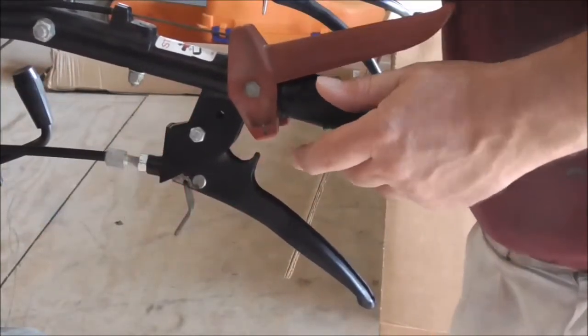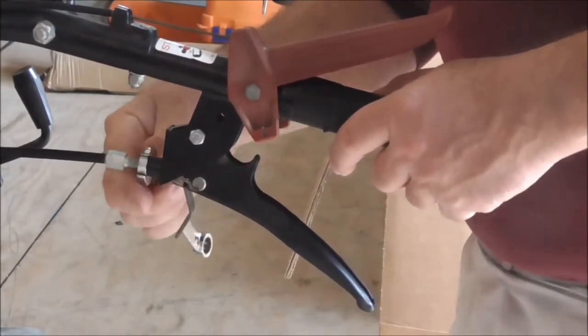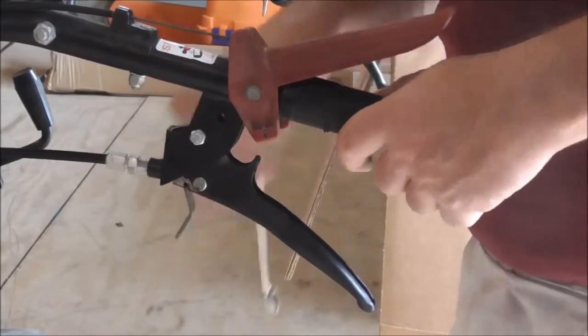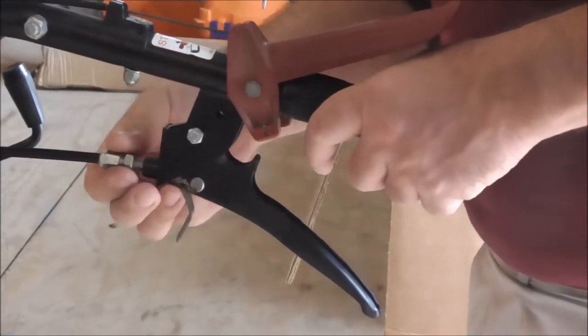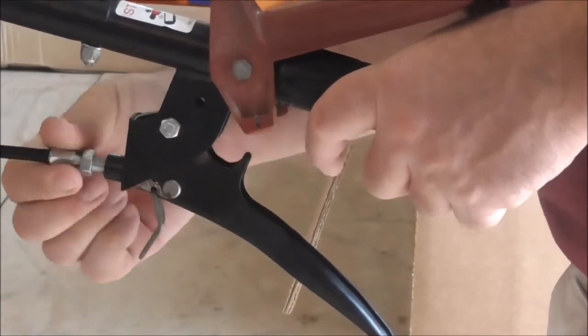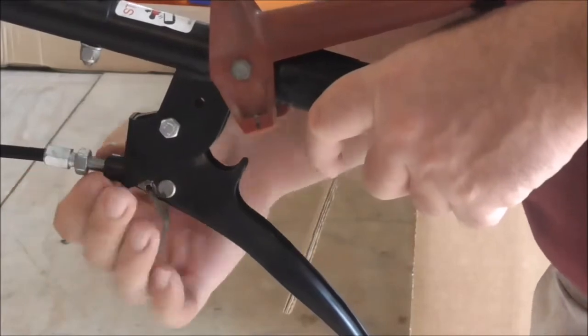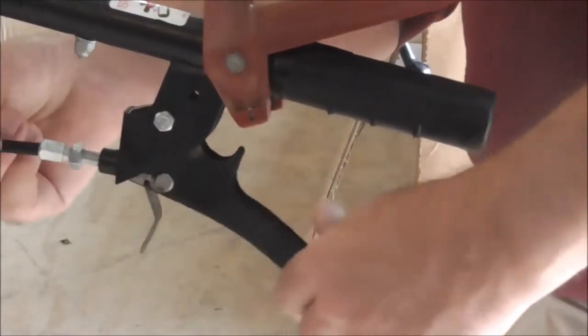To adjust the slack, you loosen this lock nut with a 13mm wrench and back it out. If you want to decrease the amount of slack, you spin this 11mm adjusting bolt outward, lengthening the amount of threads you can see, and that will decrease the amount of slack.